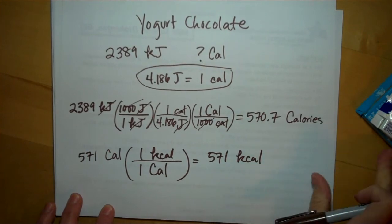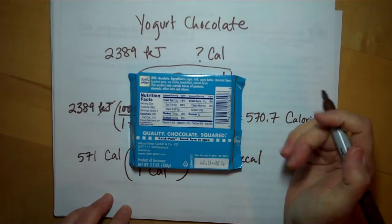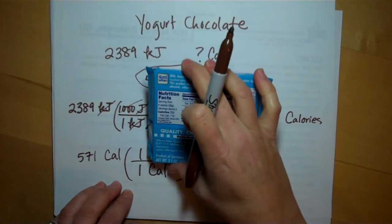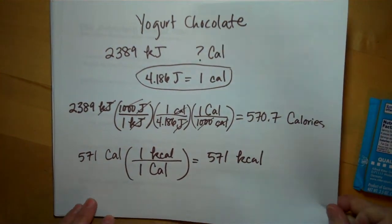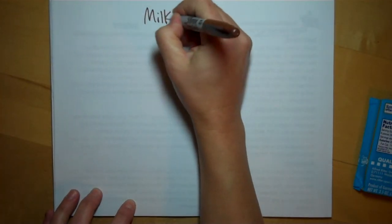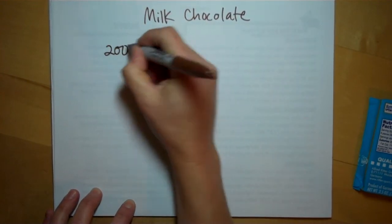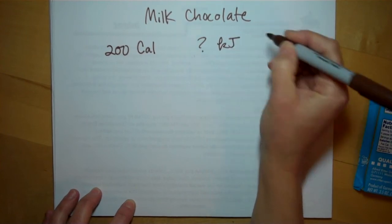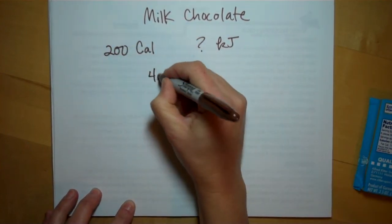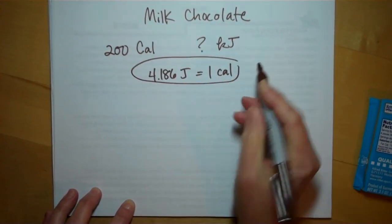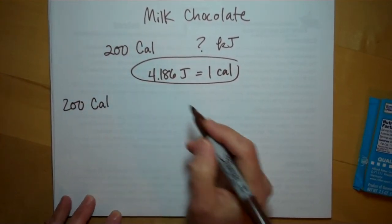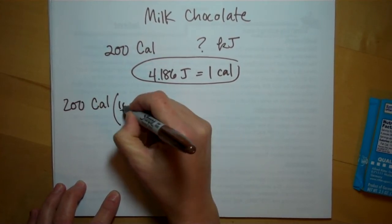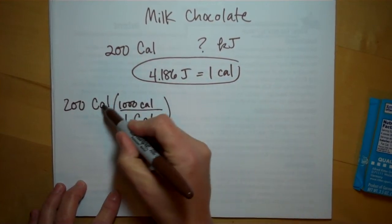If I wanted to do the opposite conversion, converting, if a German person wanted to eat this and was wondering how many kilojoules or kilocalories were in it and wanted to do the conversion, they would start with, they would be starting with 200 calories. So let's do this one. The milk chocolate. So the milk chocolate. There are 200 calories in one serving and the German visitor is curious to know how many kilojoules of energy that is. So they have to use the same exact conversion factor. It's the only one we know. It's the only one we have. So I'm going to start with what I'm given. 200 calories of energy. And I know that one capital calorie of energy is the same as a thousand little calories. So my capital calories will go away.